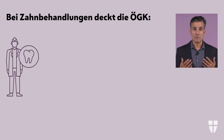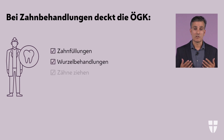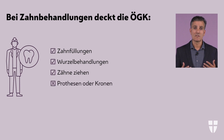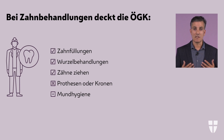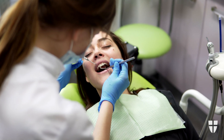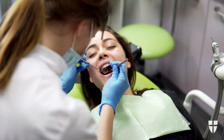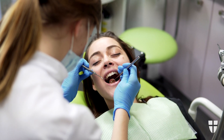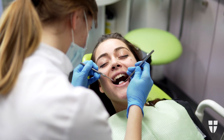In the case of Azra's dental treatment, the insurance company covers fillings, root canal treatments, or tooth extraction. However, Azra would have to pay for prostheses or dental crowns herself. With ÖGK, oral hygiene is only free for children and young people under 18. Adults insured with ÖGK must pay the costs themselves. Other health insurers, such as SVS, refund part of the cost of oral hygiene. The benefits therefore vary depending on the health insurance fund.